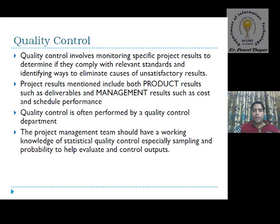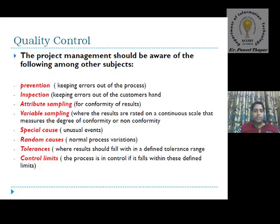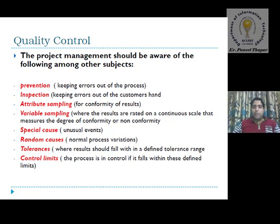The project management team should be aware of the following subjects while controlling quality. The first is prevention — keeping errors out of the process. If any error occurs, the system prevents it. The next is inspection — keeping errors out of the customer's hands, meaning we inspect for errors before submitting the product to the customer.